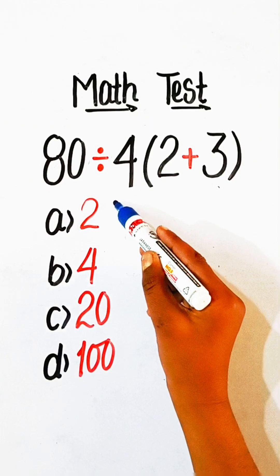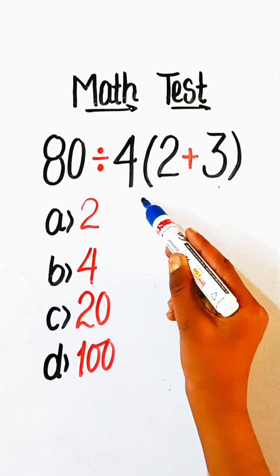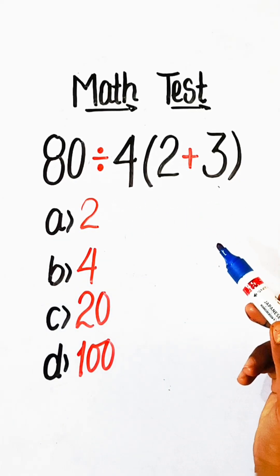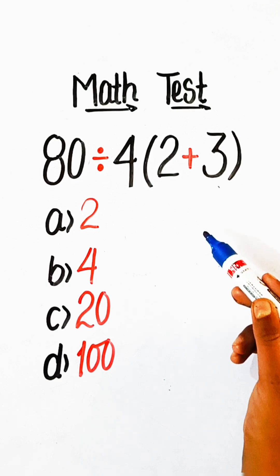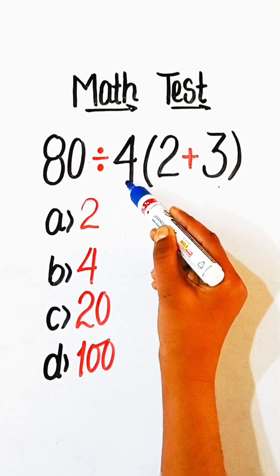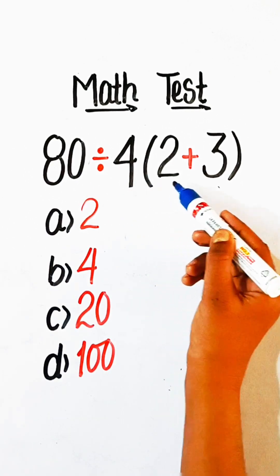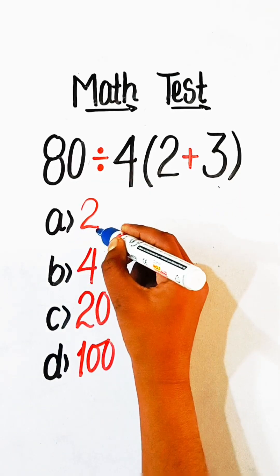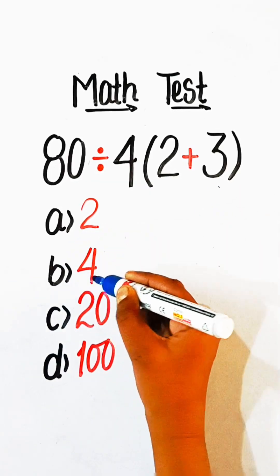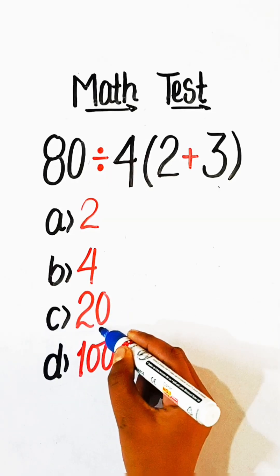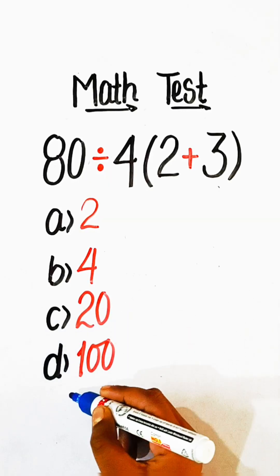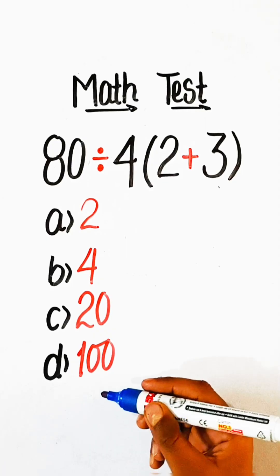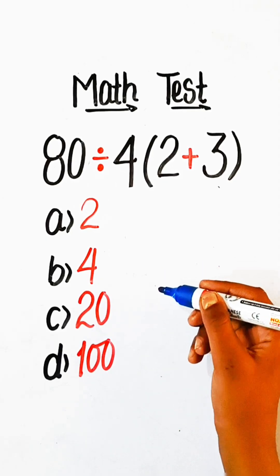Hello everyone, welcome back to my YouTube channel. In this video we will solve this basic math problem: 80 divided by 4 under bracket 2 plus 3 equals to what? Option A: 2, Option B: 4, Option C: 20, or Option D: 100. So try to solve it.